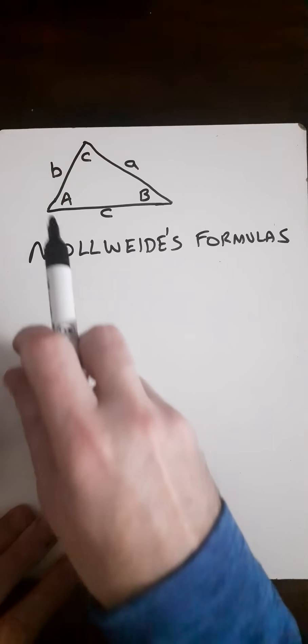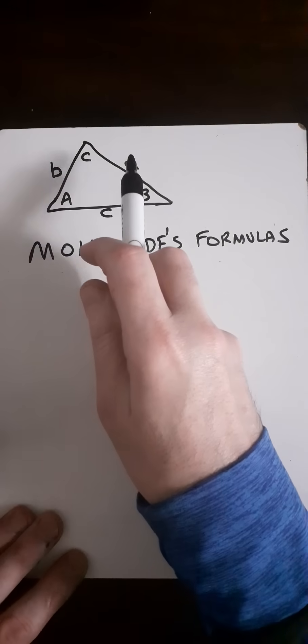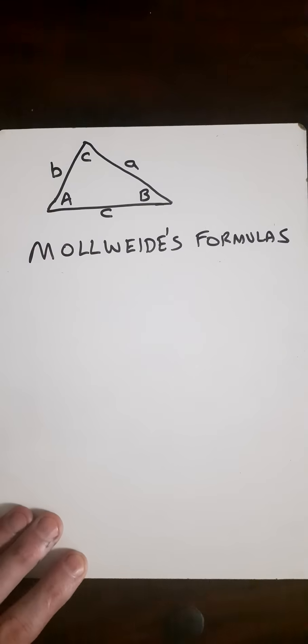So if we look at a scalene triangle with angles A, B, and C in capital letters, and then the corresponding sides in lowercase are a, b, and c.